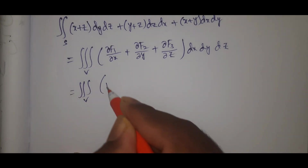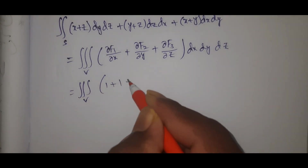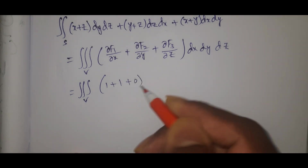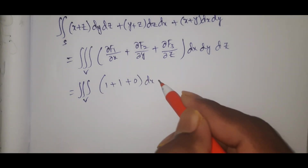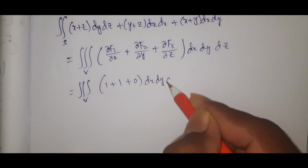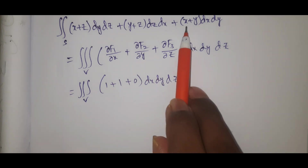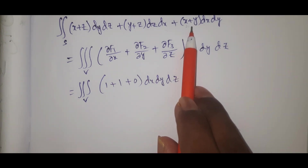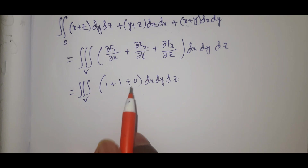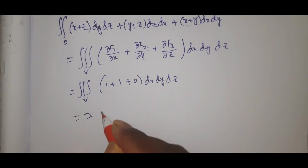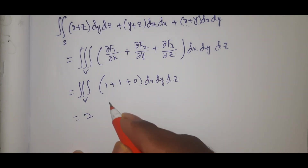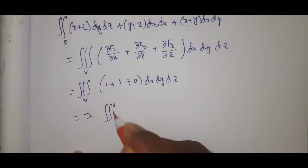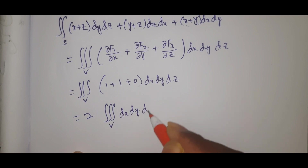Now computing: ∂f1/∂x equals 1, ∂f2/∂y equals 1, ∂f3/∂z equals 0. So the sum is 1 plus 1 plus 0 equals 2. Therefore we have the triple integral over V of 2 dx dy dz.